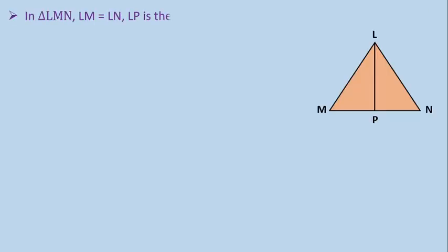Now, let's understand the concept of RHS by an example. In triangle LMN, LM is equals to LN, LP is the altitude, and you have to show that LP bisects MN.